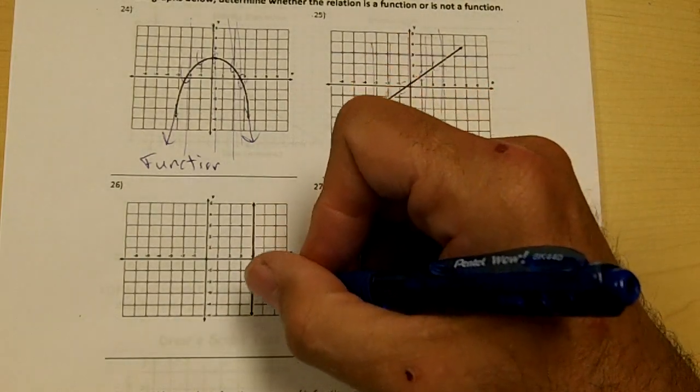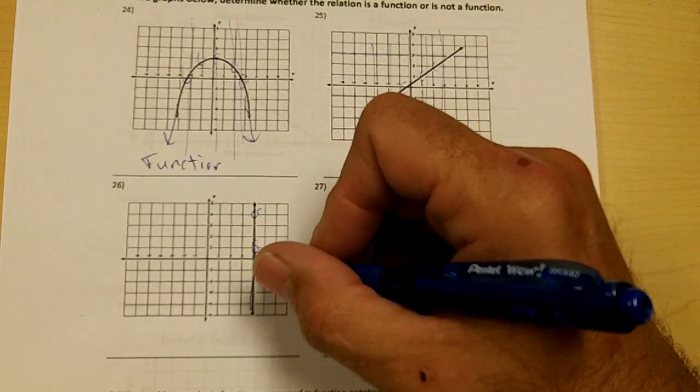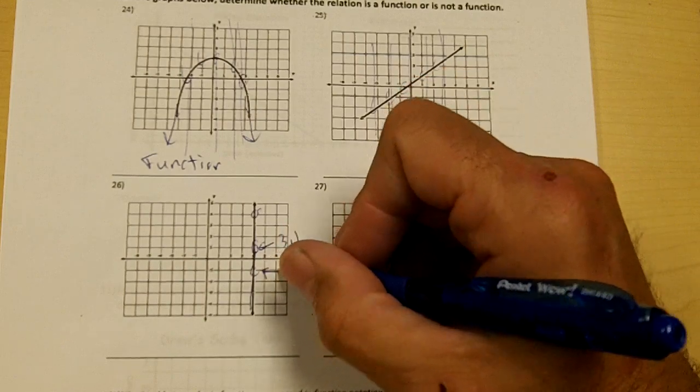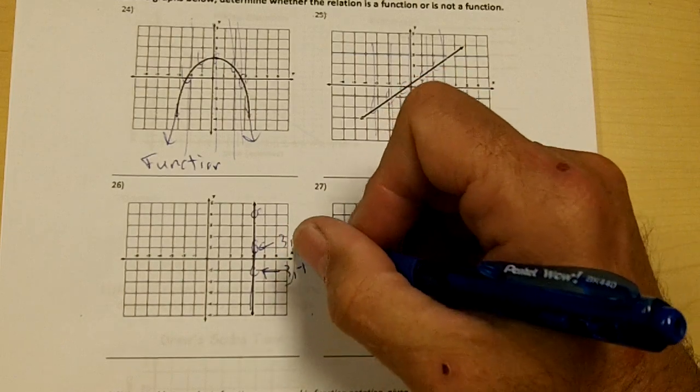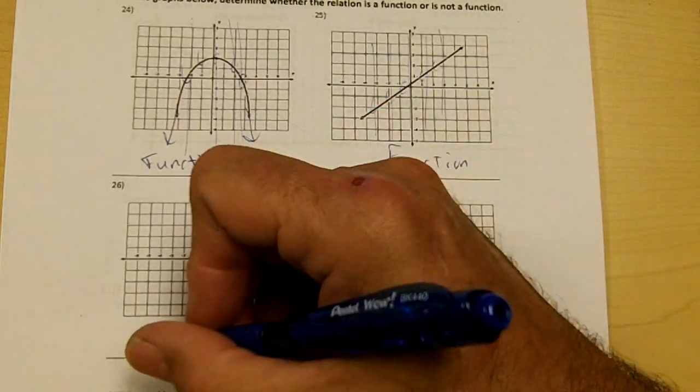Right here, this graph, let's look at two ordered pairs. This ordered pair would be 3, 1. This ordered pair would be 3, negative 1. Notice the x is repeating. Since the x is repeating, it's not a function.